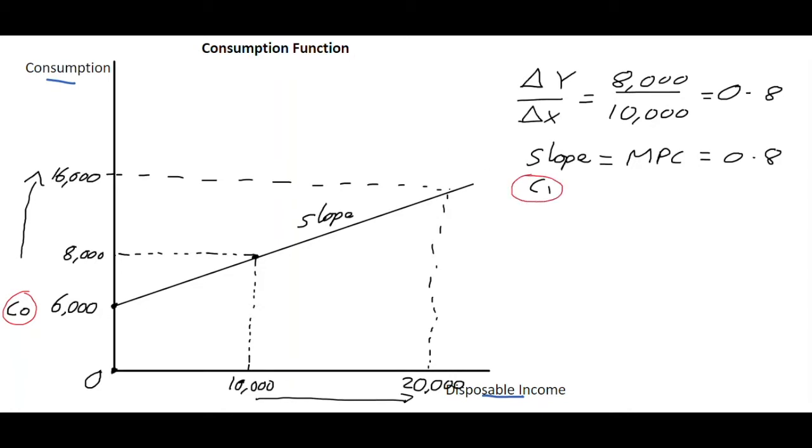So if we write out the equation for the consumption function we say that consumption in the economy is equal to an intercept term C0 plus a slope term C1, or MPC, multiplied by disposable income.